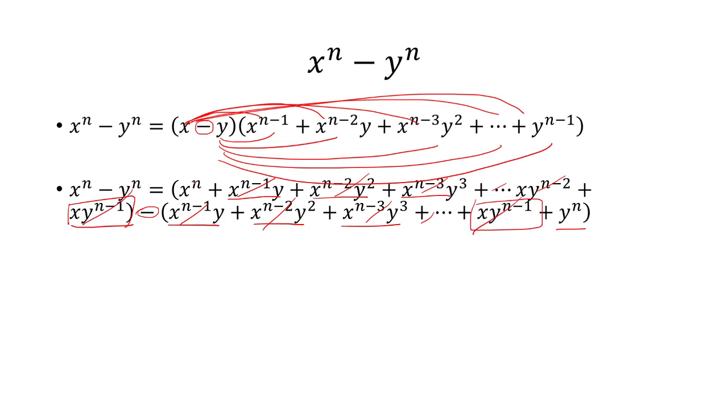So all that's going to be left is x to the n and y to the n. But there's going to be a minus in between them. So that's just going to be x to the n minus y to the n. And thus we've proved the equality.